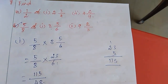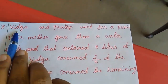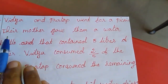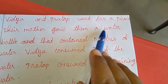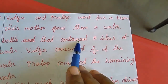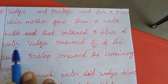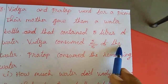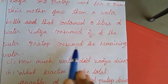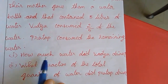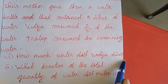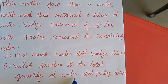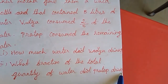Now we will move to the 8th sum. Vidya and Pradhaap went for a picnic. Their mother gave them a water bottle that contained 5 liters of water. Vidya consumed 2 by 5 liters of the water. Pradhaap consumed the remaining water. First question: how much water did Vidya drink? Second question: what fraction of the total quantity of water did Pradhaap drink?